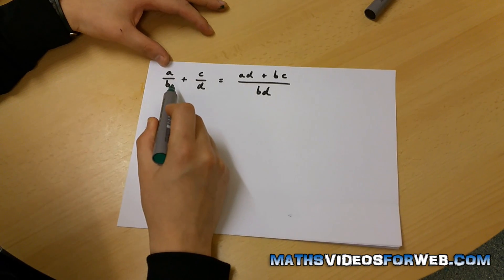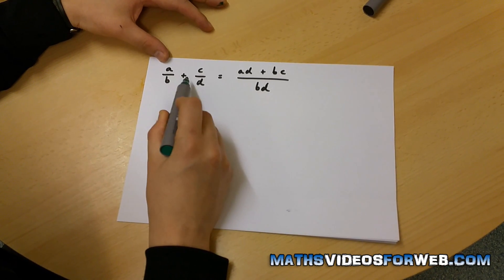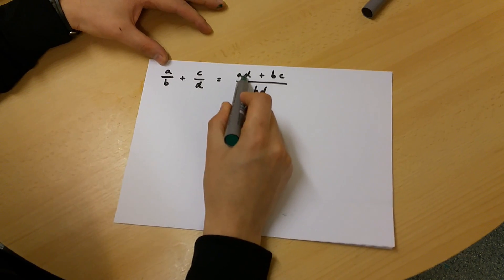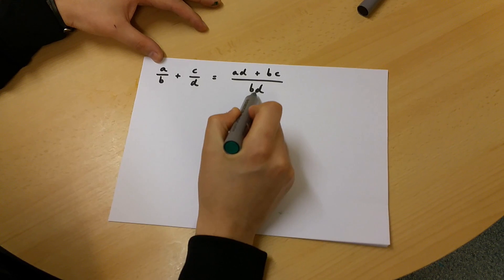In this video, I'm going to prove that A/B plus C/D is equal to (AD plus BC)/BD.